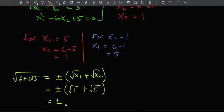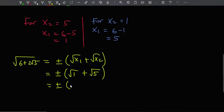That's going to be plus or minus the square root of 1 plus the square root of 5. The square root of 1 is actually 1. Then the square root of 5—that's irrational, so I leave it like that.